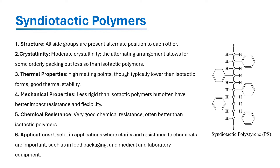The presence of alternating side groups in the polymer chain resists chemical penetration and degradation slightly better than isotactic polymers. Their combination of crystalline and amorphous regions along with the molecular structure potentially creates a more difficult path for chemicals, and that is why syndiotactic polymers have better chemical resistance than isotactic polymers.